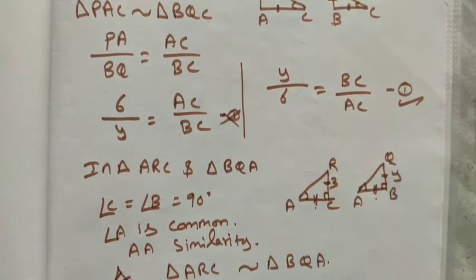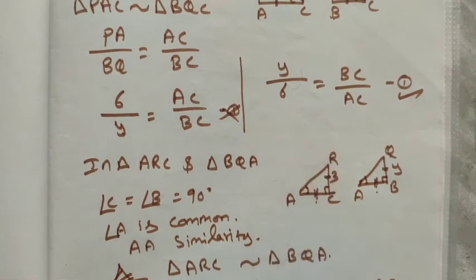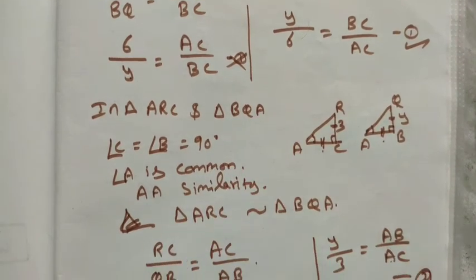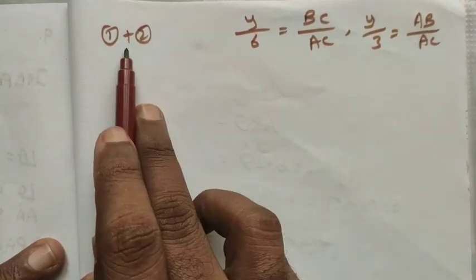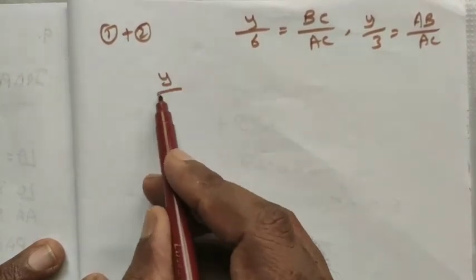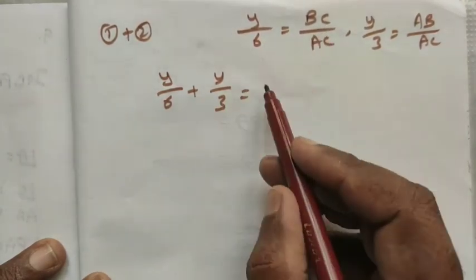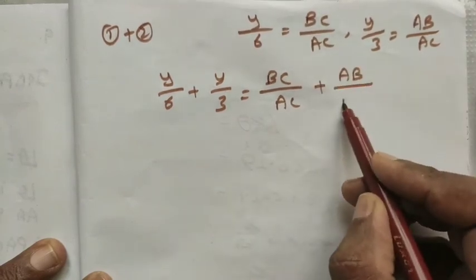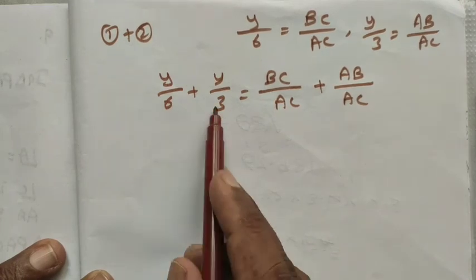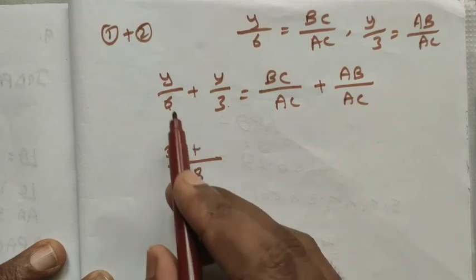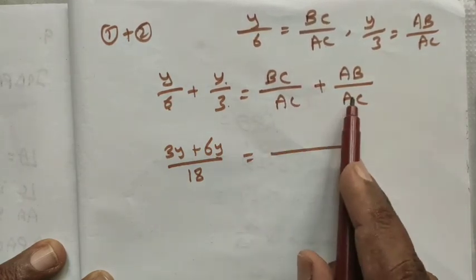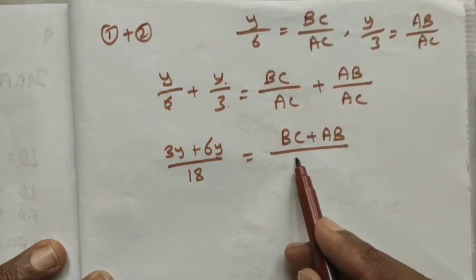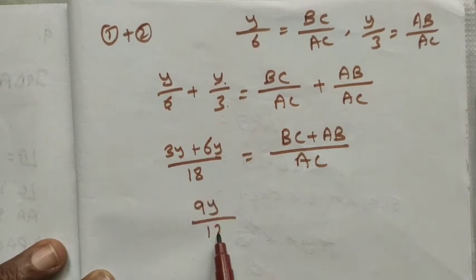Now we add Equation 1 and Equation 2. Since AC is the common base in both, it is easy to add the terms. Adding: y/6 plus y/3 equals BC/AC plus AB/AC. Taking LCM of 6 and 3, which is 6: cross multiplication gives 3y plus 6y, which equals 9y divided by 18 on the left side.